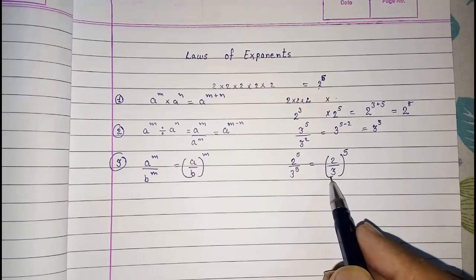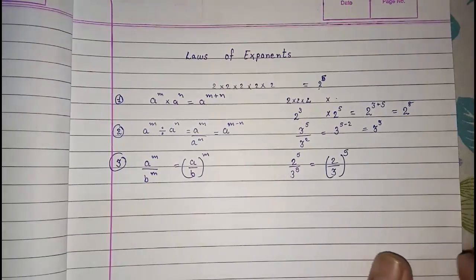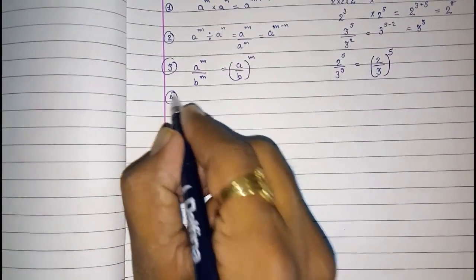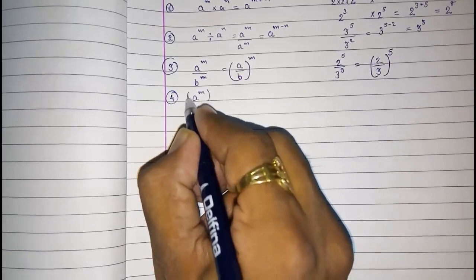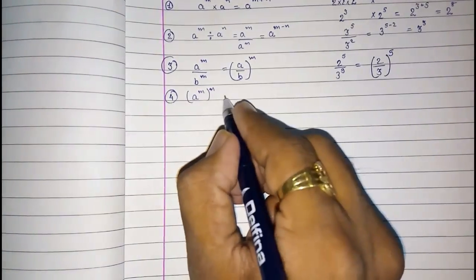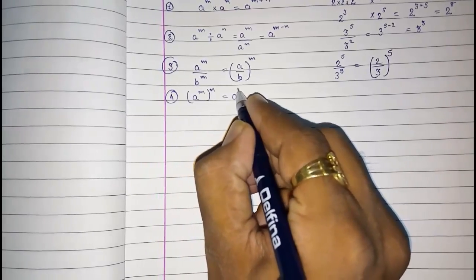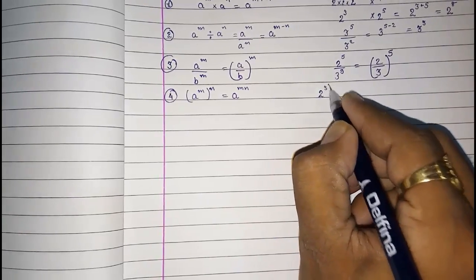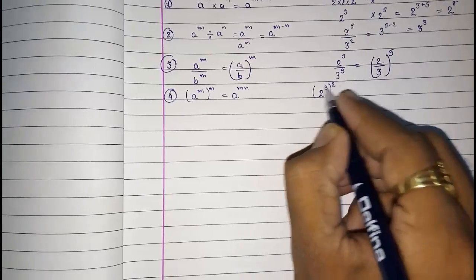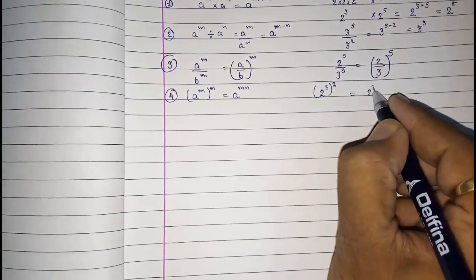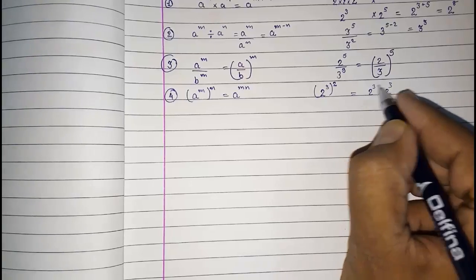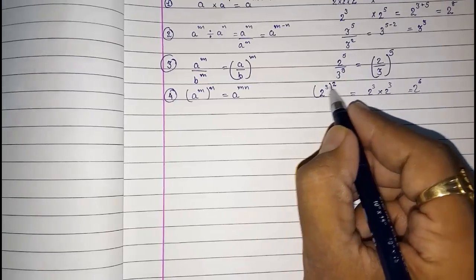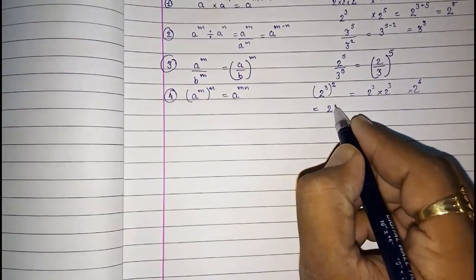The fourth law: a raised to m, whole raised to n — when you have a power raised to another power — the result is a raised to m times n, meaning the powers multiply. For example, 2 raised to 3, whole raised to 2, means 2 raised to 3 taken twice. Adding gives 2 raised to 6. So directly multiply: 3 times 2 equals 6, giving 2 raised to 6.